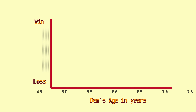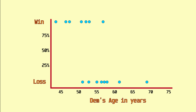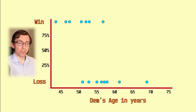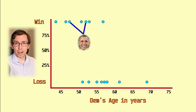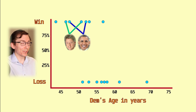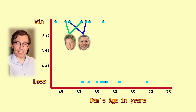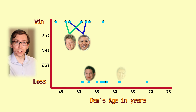Here you can see a plot of the data. On the horizontal axis we have the age of the Democratic candidate in years. On the vertical axis we have whether or not that candidate won the White House. So here we can see, for example, President Obama's two victories and President Bill Clinton's two victories, as well as many losses, including Al Gore or John Kerry.